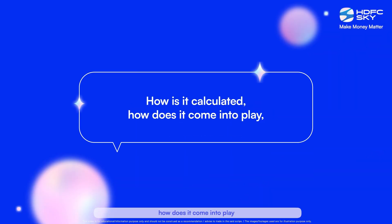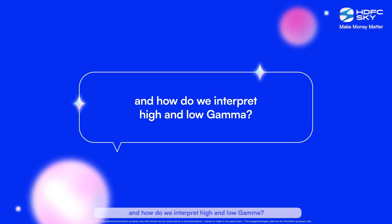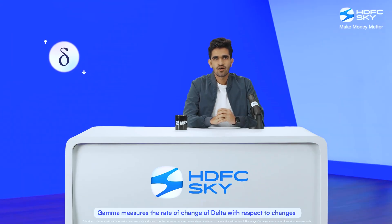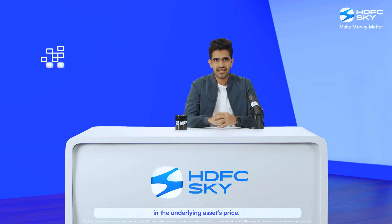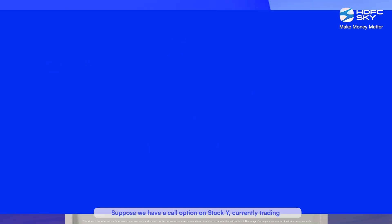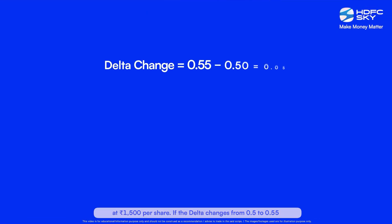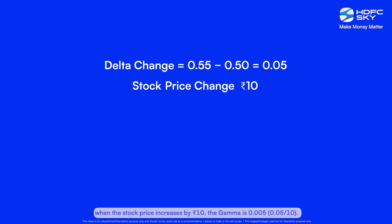And what about Gamma? How is it calculated and how do we interpret high and low Gamma? Gamma measures the rate of change of Delta with respect to changes in the underlying asset's price. The formula for Gamma is the change in Delta divided by the change in the underlying asset's price. Suppose we have a call option on stock Y currently trading at ₹1500 per share. If the Delta changes from 0.5 to 0.55 when the stock price increases by ₹10, the Gamma is 0.005, which is 0.05 divided by 10.